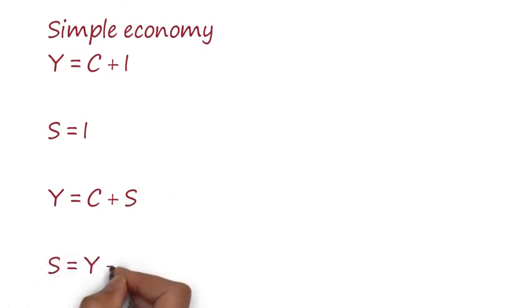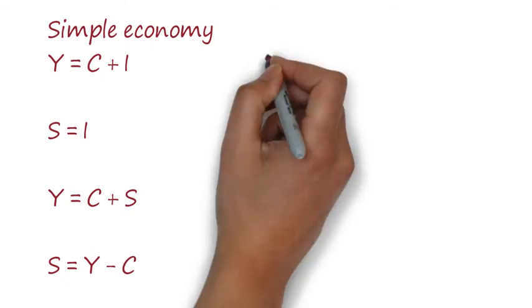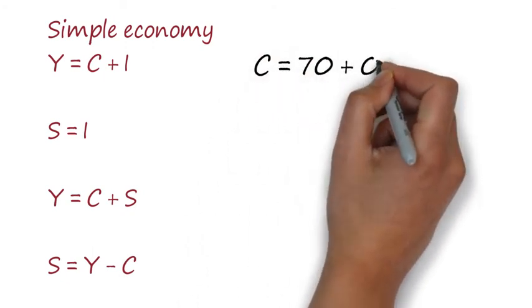Let's look at an example. You are given a consumption function: C = 70 + 0.4Y.